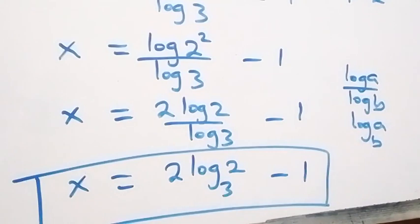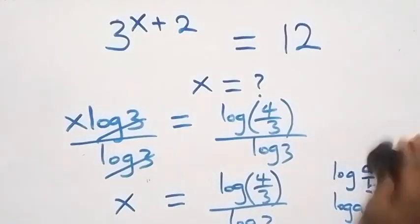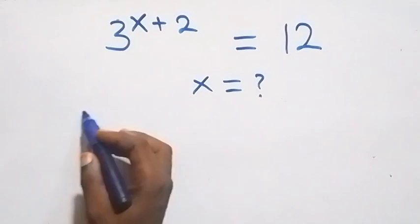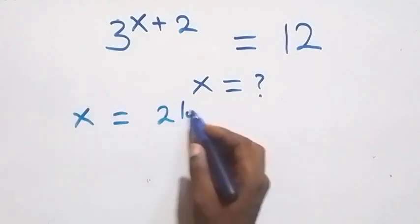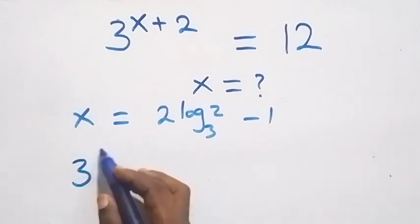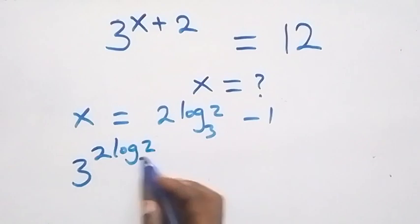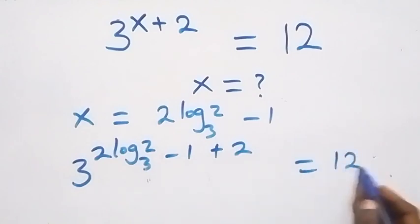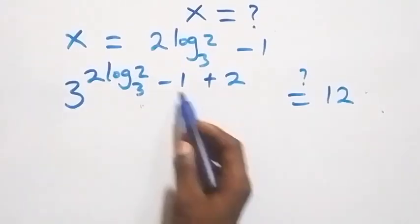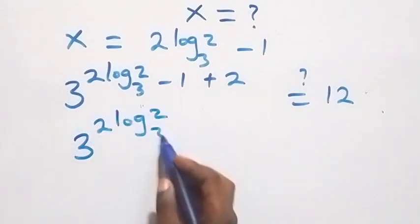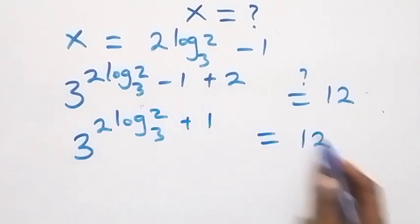So the value of x in this given problem is 2 log₂ to base 3 minus 1. Now let's check if this satisfies the given problem. We substitute x equals 2 log₂(base 3) minus 1, giving us 3 raised to power (2 log₂(base 3) minus 1 plus 2), which equals 3 raised to power 2 log₂(base 3) plus 1, and this should equal 12.